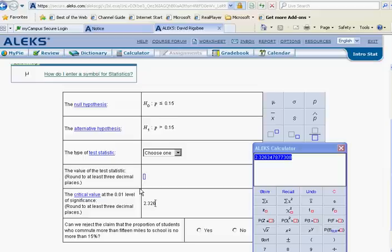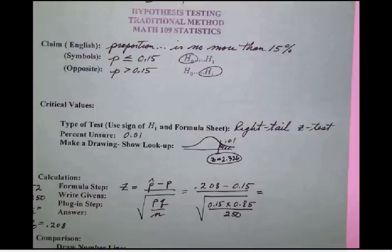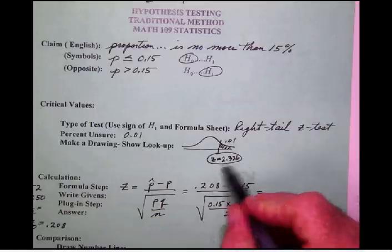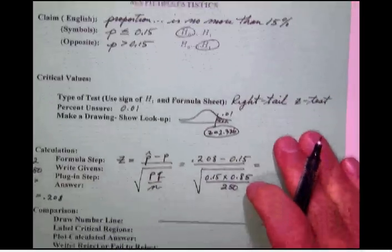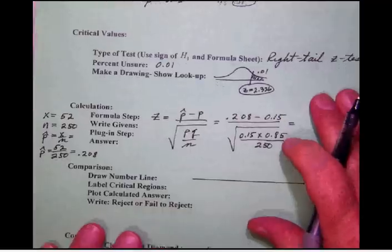So our critical value, to three decimal places, is 2.326, and that's the only one of those because this is a right tailed test. Let's go back to our notes here now and catch up on them.